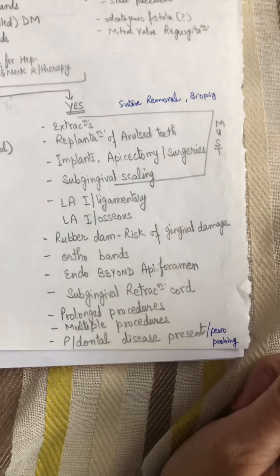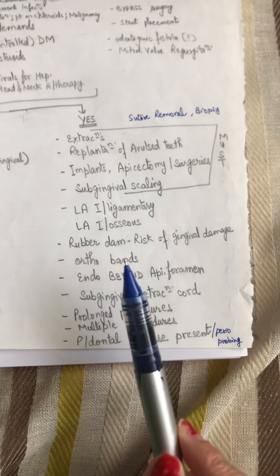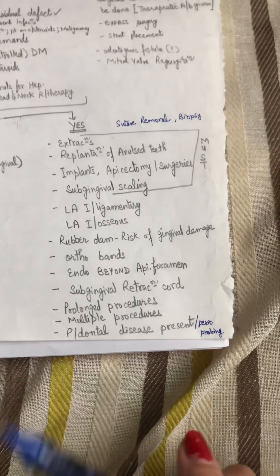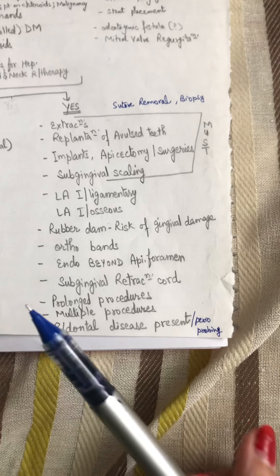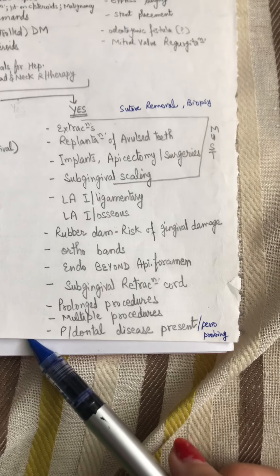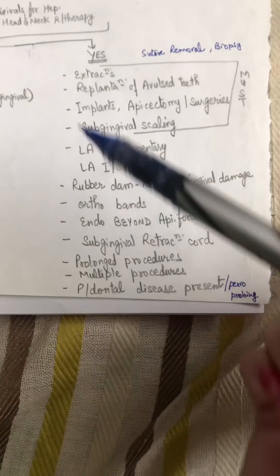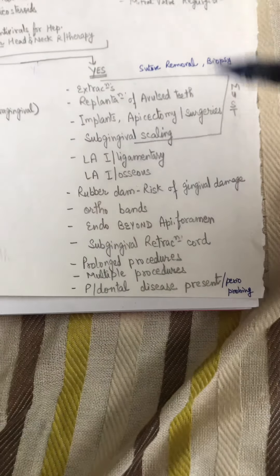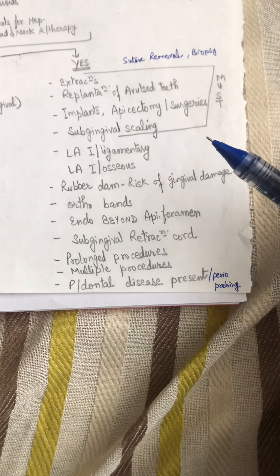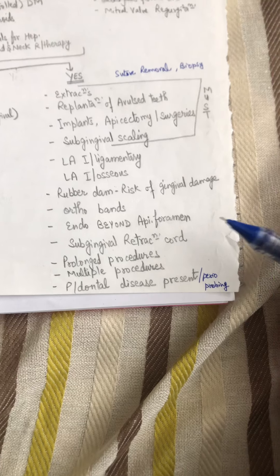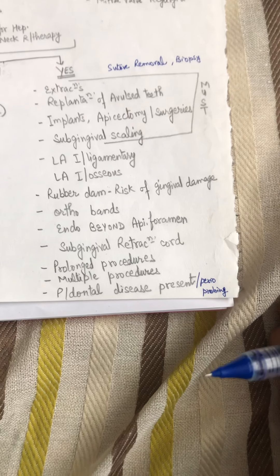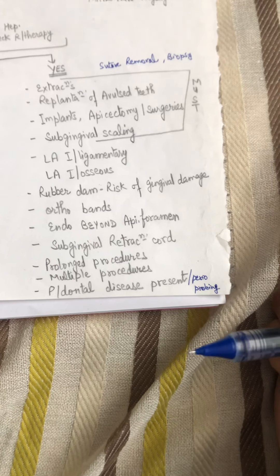Biopsy — yes, you need it. Implants — yes, you need it. Periodontal disease present — yes. And as a general consideration, if it is a prolonged procedure or you are doing multiple procedures, then you can consider antibiotic prophylaxis. So if you have a patient where any of these apply and you determine prophylaxis is needed, not all patients need it — you will go through the patient's history, and if you find certain things in that history, you will go for the antibiotic prophylaxis.